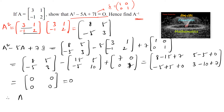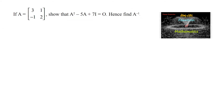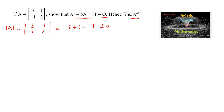Therefore A squared minus 5A plus 7I equals 0 — proved. Now we will find A inverse. The determinant of A = [[3,1],[-1,2]] is 3×2 minus (-1×1) = 6 plus 1 = 7, which is not equal to 0. So A inverse exists.